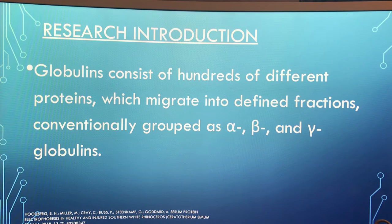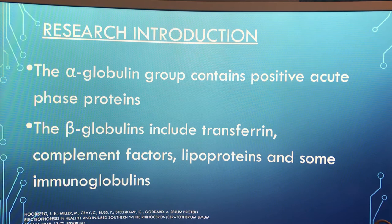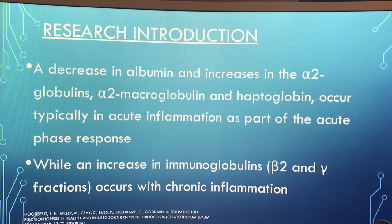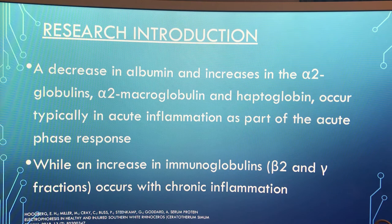Globulins consist of hundreds of different proteins which migrate into defined fractions, conventionally grouped as alpha, beta, and gamma globulins. The alpha globulin group contains positive acute phase proteins. Beta globulins include transferrin, complement factors, lipoproteins, and some immunoglobulins. Variations in serum proteins with concentrations above 0.5 g/L may result in changes to the electrophoretic pattern. A decrease in albumin and increase in alpha-2 globulins, alpha-2 macroglobulin, and haptoglobulin occur typically in acute inflammation, while an increase in immunoglobulins, beta-2, and gamma fractions occurs with chronic inflammation.